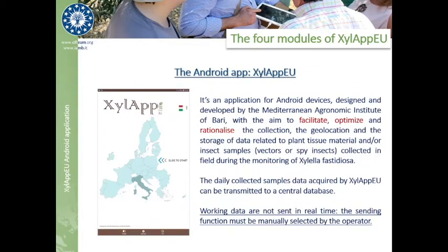Here is the formal definition of Xylap EU. It's an application for Android devices, designed and developed by the Mediterranean Agronomic Institute of Bari, with the aim to facilitate, optimize and rationalize the collection, the geolocation and the storage of data related to plant ancient material and/or insect samples — vectors or spy insects — collected in the field during the monitoring of Xylella fastidiosa. Please notice that internet access is not strictly required while sampling; it is only required when the user explicitly sends a packet of information to the server, although it may be very useful to improve positioning accuracy.